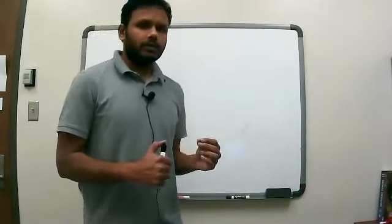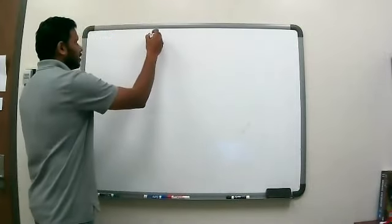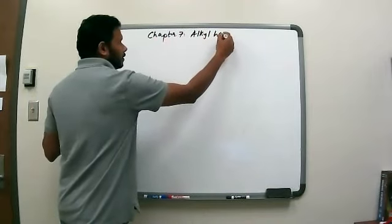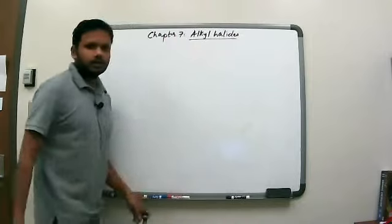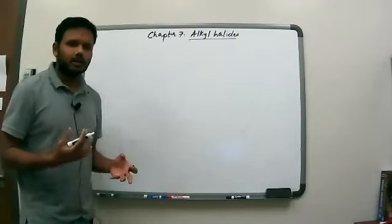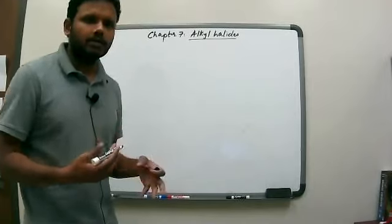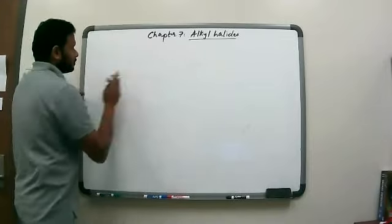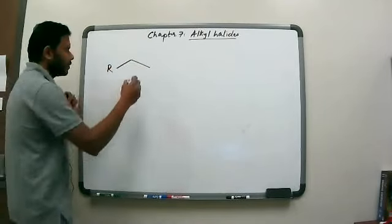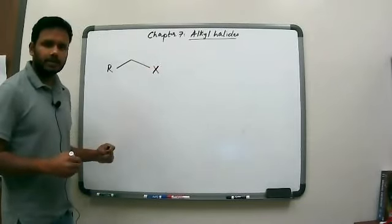In this video we're going to start talking about reactions of alkyl halides in chapter 7. Let's draw a very general structure for an alkyl halide and go through how the textbook organizes it. We have some R group connected to an X, which is a halogen.